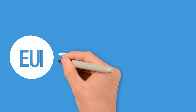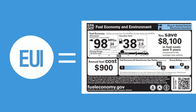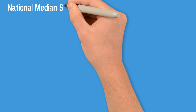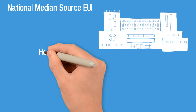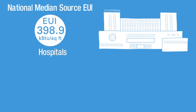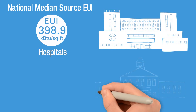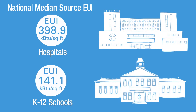Similar to a car, EUI is a miles-per-gallon assessment of a building's energy efficiency. Context is important when considering EUI as a measure of energy efficiency. Hospitals use more energy because of all their specialized equipment, while schools use less energy.